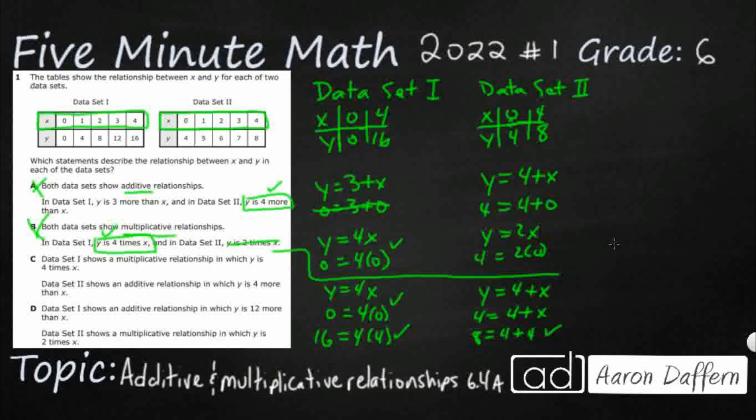Data set 1 shows an additive relationship in which y is 12 more. So, y equals 12 plus x. This is D right here. And so, I'm looking at my first 0. 0 equals 12 plus... No. That's not going to work. It works for the last one, but it doesn't work for that first one. And they say data set 2 is multiplicative. y is 2 times x. y equals 2x. So, my y of 4 is supposed to equal 2 times 0. No. Works for the last one. Doesn't work for the first one. So, D is incorrect as well. The answer here is going to be C.